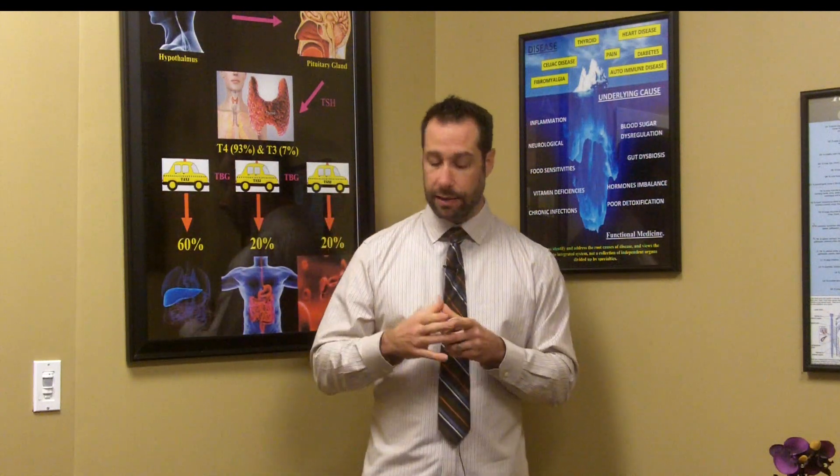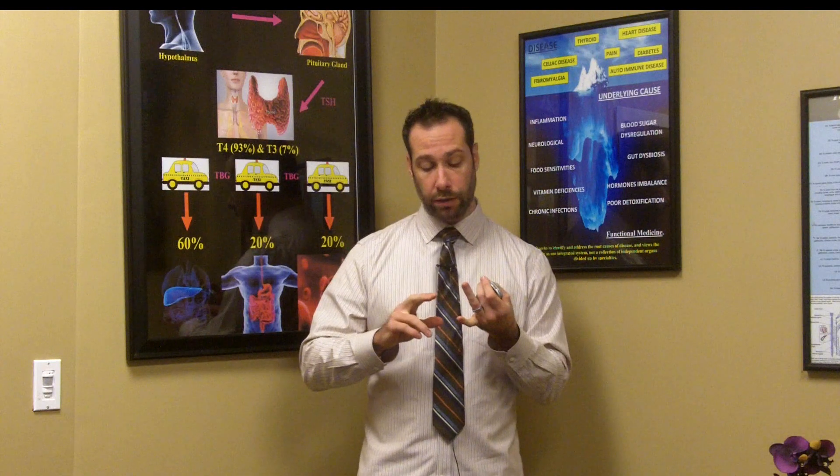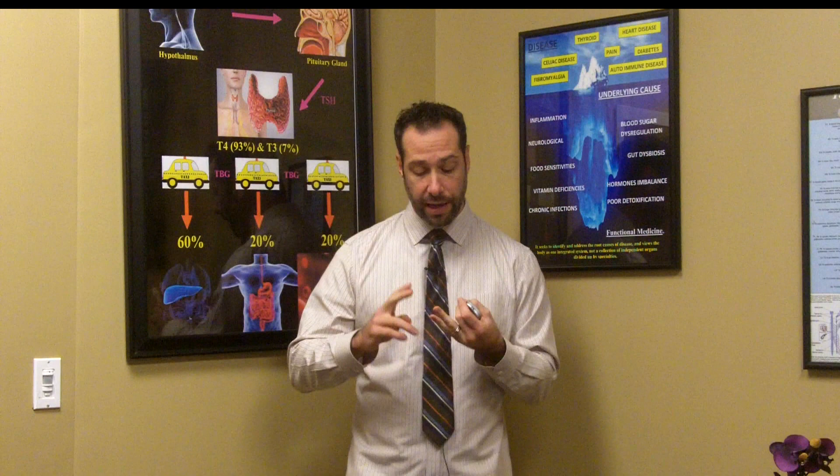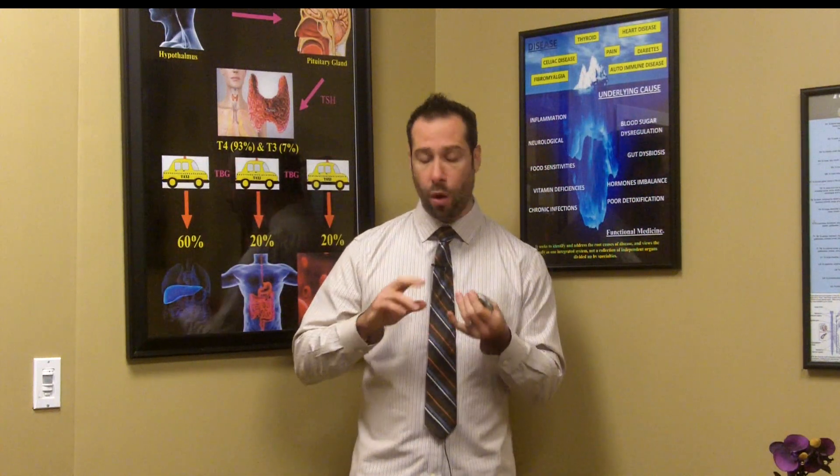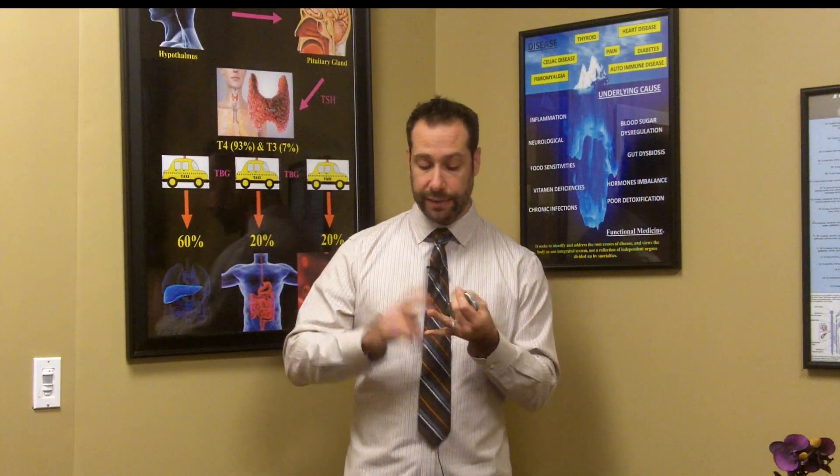Next, you want to have your secretory IgA levels tested. This immunoglobulin is the first line of immune system defense and indicates whether the mucosal barrier has lost its integrity. High levels of secretory IgA are associated with active infection, while low levels indicate the immune system has taken a beating. You also want a functional stool test that looks at long and short-chain fatty acids, and one that evaluates pancreatic elastase. The pancreas releases lipases that help you break down and absorb fats — including fat-soluble vitamins A, D, E, and K.